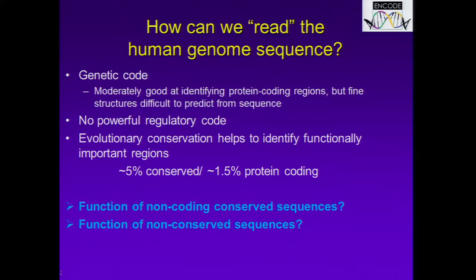Back in 2003, when we were anticipating the completion of the human genome sequence, we were asking the question: how can we read the sequence? We knew we had the genetic code, we were moderately good at identifying protein coding regions, but fine structures were difficult to predict from the sequence. We had no powerful regulatory code. We knew that evolutionary conservation can help to identify functionally important regions. At that time, it was estimated that about 5 percent of the genome was conserved and 1.5 percent was protein coding. We were really interested in finding out what the function of the non-coding conserved sequences are, as well as the function of the non-conserved sequences.